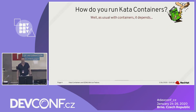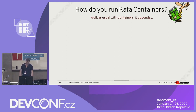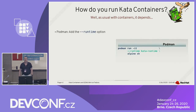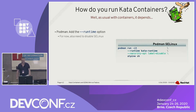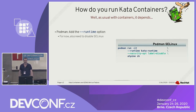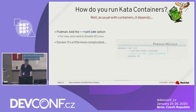So how do you actually run Kata Containers? If you have any experience with containers, the answer is: it depends. With Podman, it's fairly simple — you simply add a --runtime option and specify Kata runtime. Well, I'm sorry, I lied. For now you also need to disable SELinux with --security-opt label=disabled. That's probably going to be fixed relatively soon, I hope.